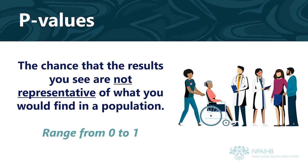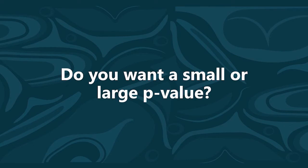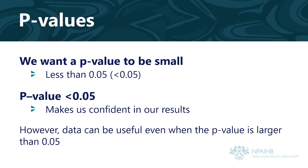P-values range from 0 to 1. So, do you want a small or a large p-value? Since we want our results to be representative of what you would generally find in the population, we want a small p-value. A small p-value, generally less than 0.05, makes us confident in our results. However, as with confidence intervals, there are no hard and fast rules. In certain cases, data can be useful even when the p-value is larger than 0.05.